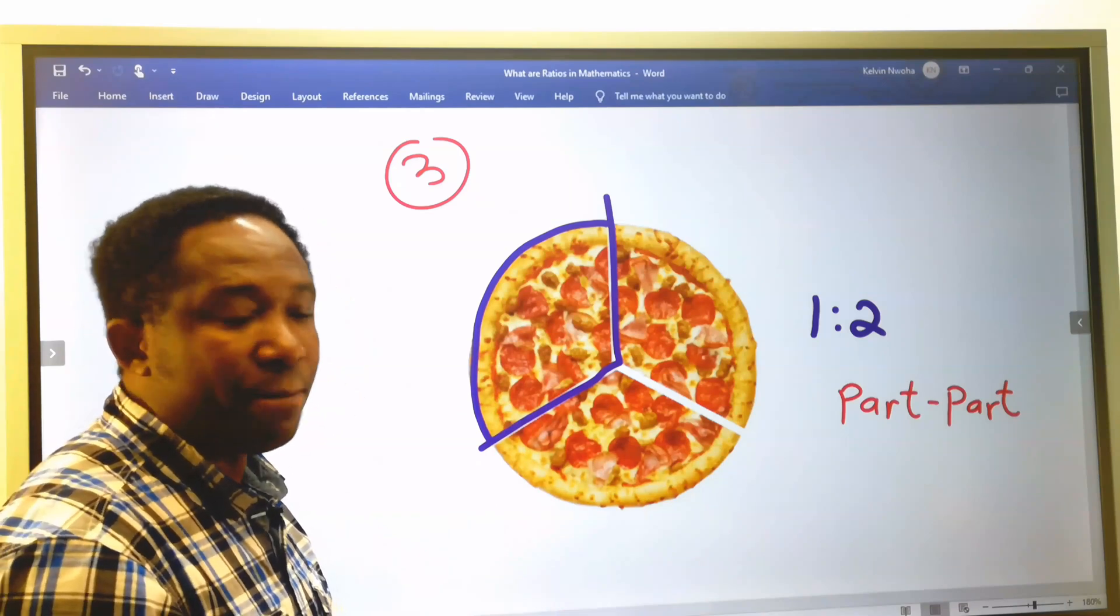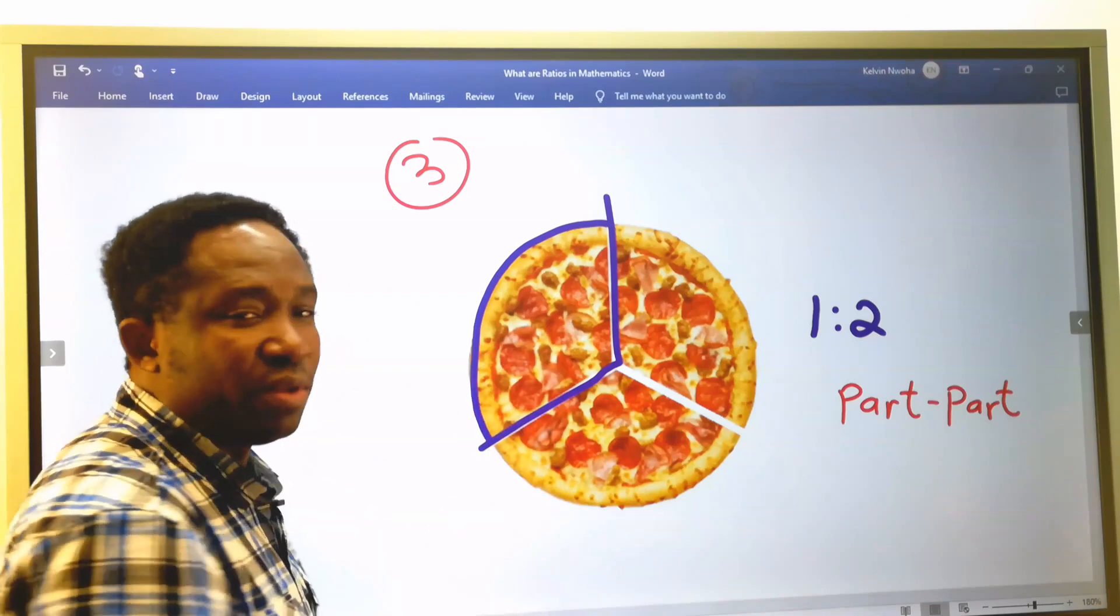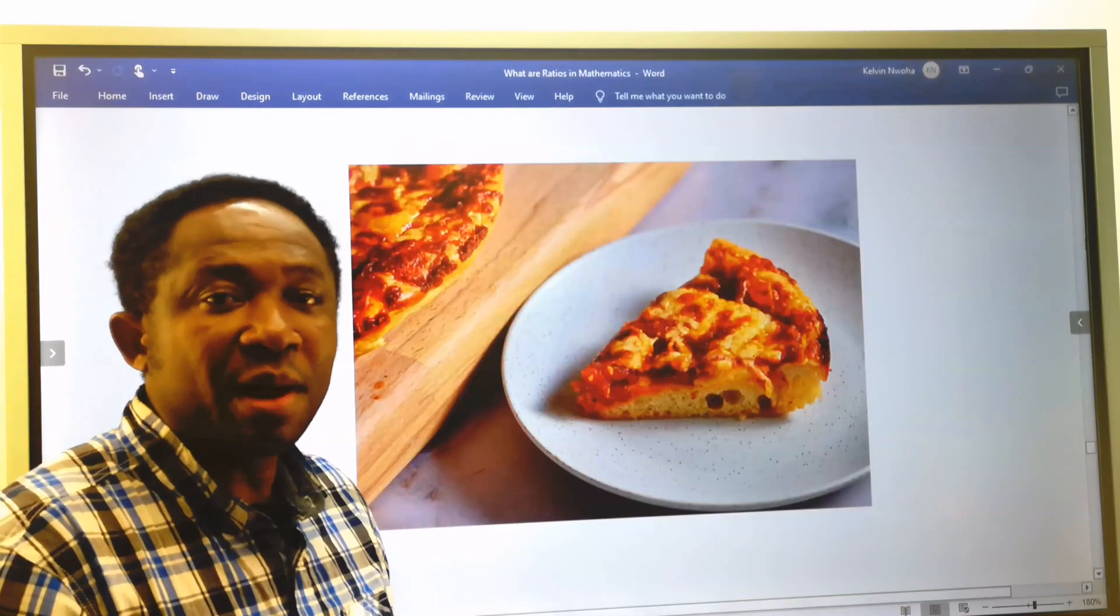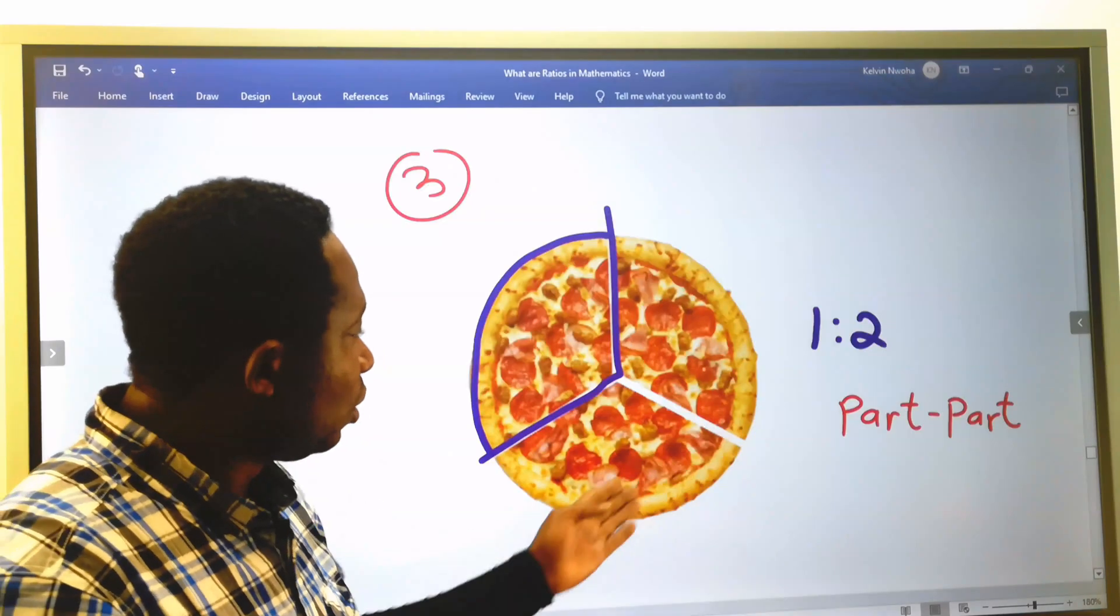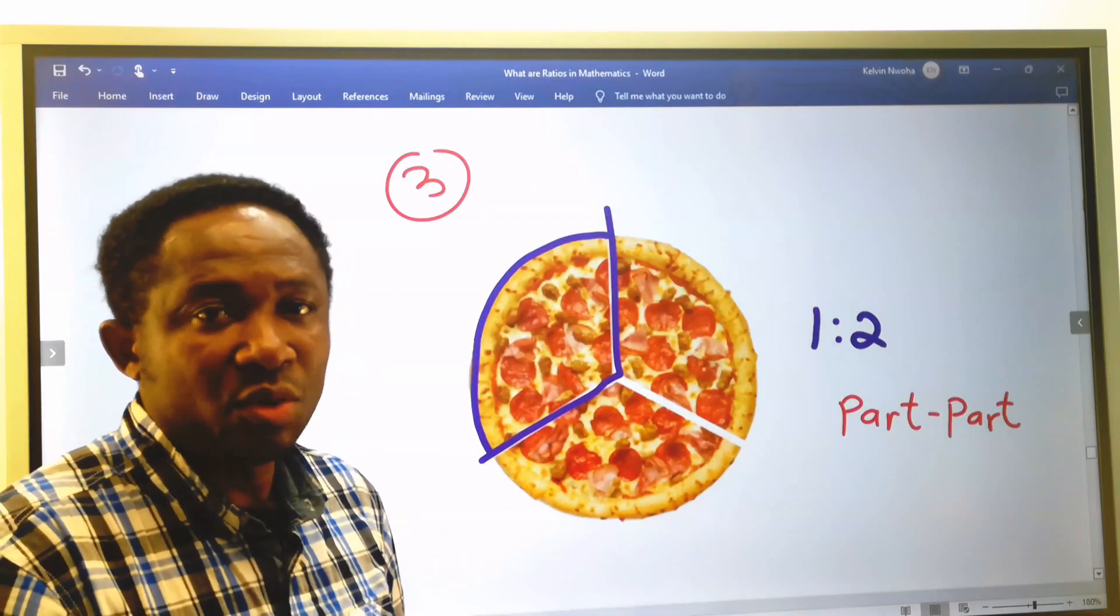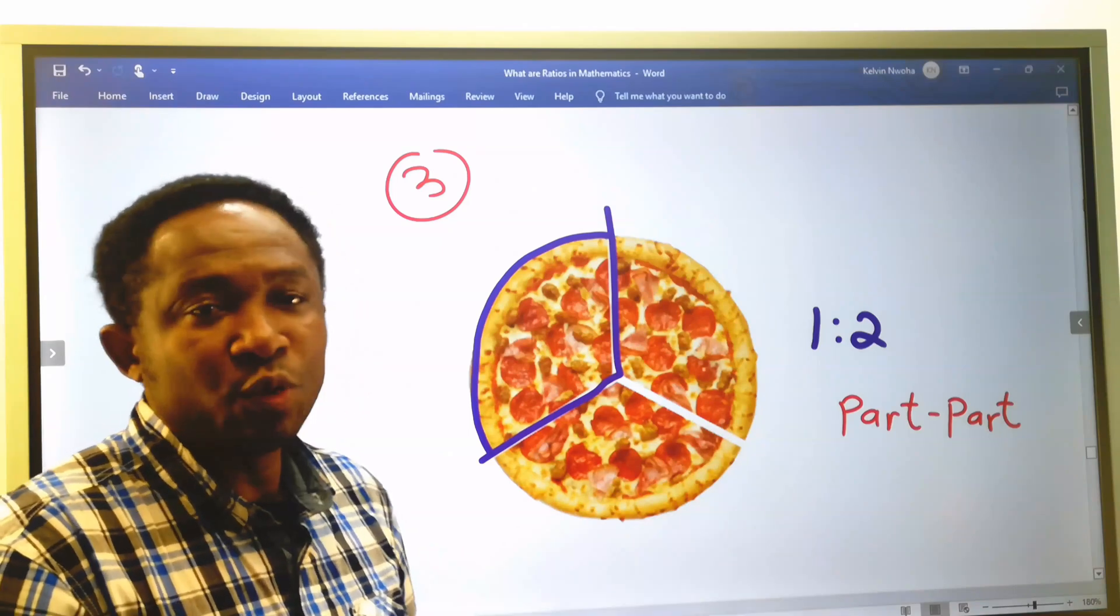Here, we are comparing parts of the pizza which probably has been removed against the 2 remaining parts. We call this part to part ratio.